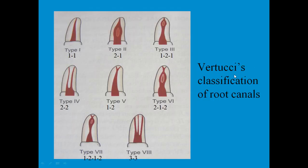Vertucci further studied more teeth and came up with a classification of eight types of root canal morphology. For a BDS level, Weine's classification suffices, but to score more marks you should also remember that Vertucci's classification has eight types. Types one and two are the same as Weine's. Type 1-2-1 means one orifice dividing into two and joining back into one. Type 2-2 is similar to Weine's type three.